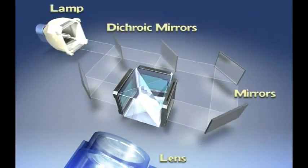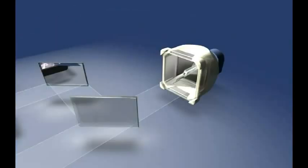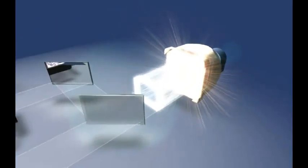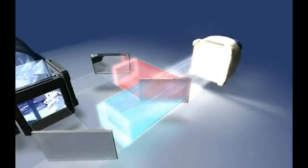Lamp light is divided by dichroic mirrors into the three primary colors of light: red, green, and blue. Dichroic mirrors are special optics that reflect certain colors while allowing other colors to pass through.